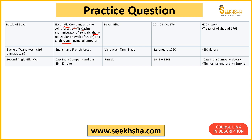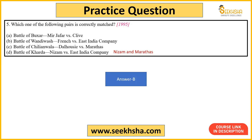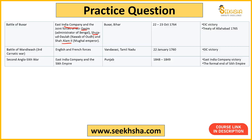Battle of Buxar was fought in 1764 and East India Company won, after which the Treaty of Allahabad was signed in 1765. Battle of Wandiwash, part of the 3rd Carnatic War, was fought between English and French forces at Vandavasi, Tamil Nadu — East India Company won. Battle of Chillianwala was one of the battles of the 2nd Anglo-Sikh War between East India Company and Punjab — East India Company won and the Sikh empire ended.